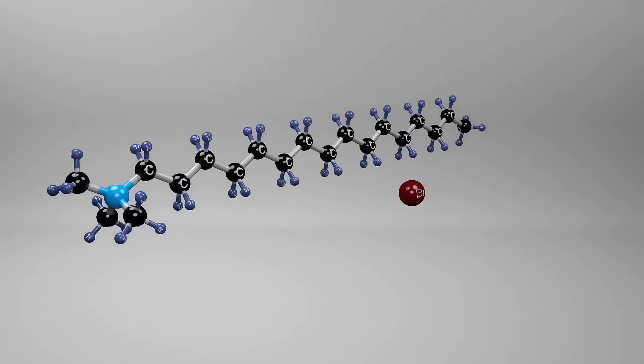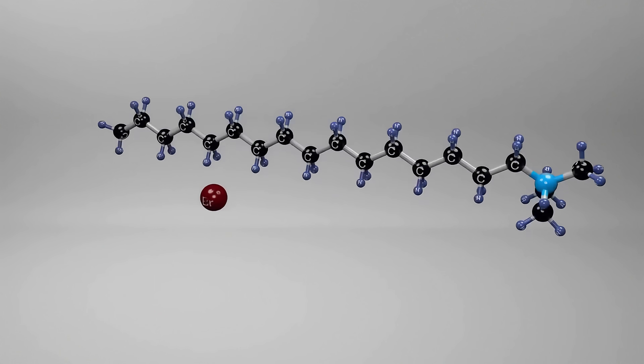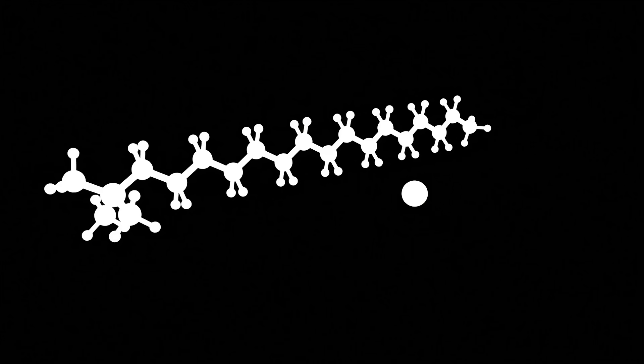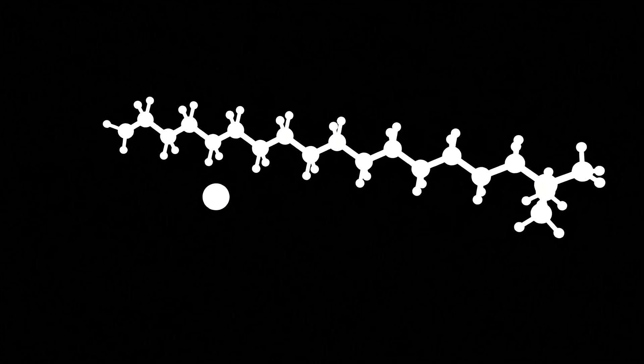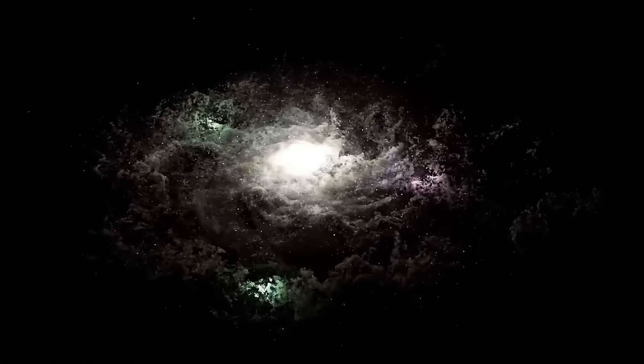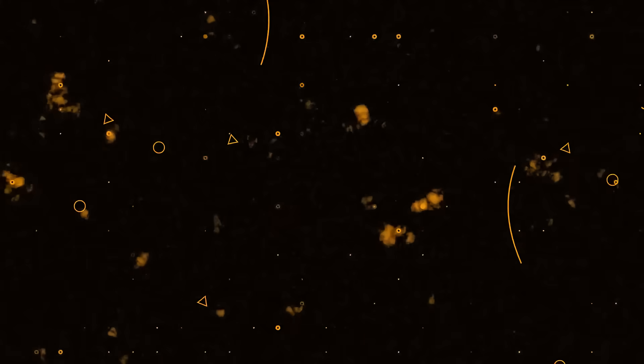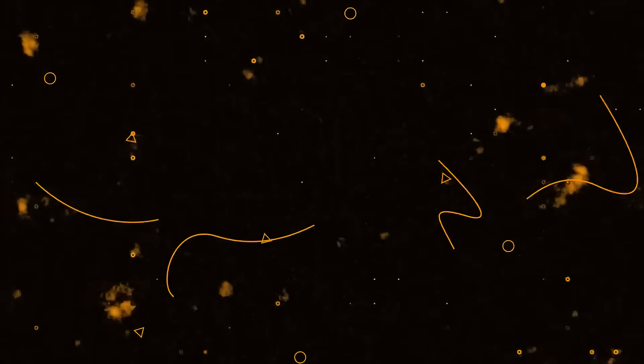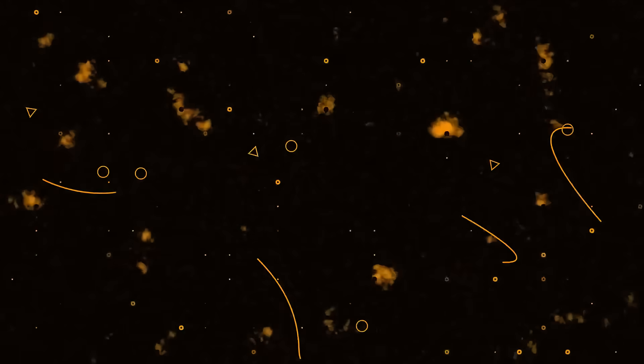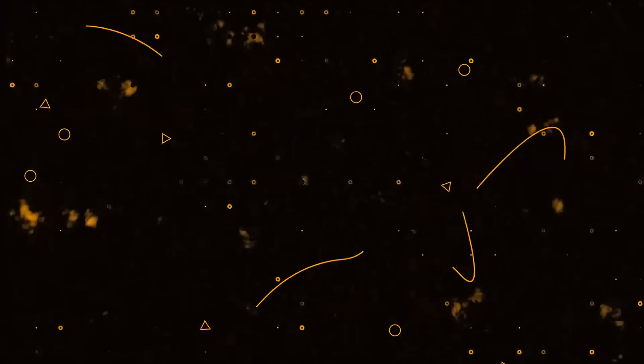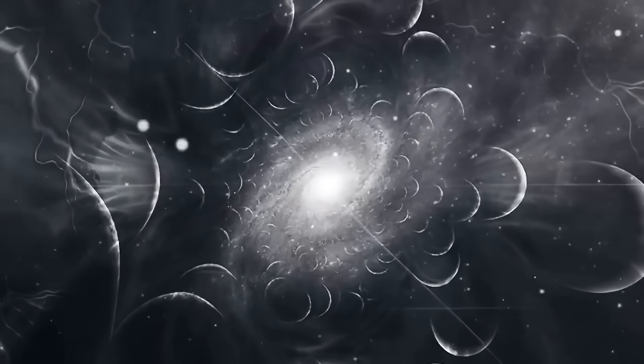Binding the universe together are cosmic filaments, enormous threads of gas, dust, and dark matter that stretch across billions of light-years. These filaments form a web-like structure that links galaxies and clusters into an intricate cosmic network. The universe's matter is not evenly distributed. Instead, it forms this delicate web of filaments and nodes where gravity gathers galaxies together, within this immense and evolving cosmic stage.